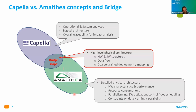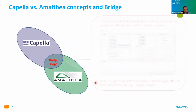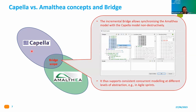Details below the physical architecture level are modeled in AMALTHEA — hardware characteristics, performance, clock domains, energy consumption, and all constraints on data timing and parallelism. Colleagues at TRT and Thales developed a bridge providing a non-destructive way to keep both models in sync: you can start designing in Capella, generate an AMALTHEA model, add more detailed information in AMALTHEA, and still push updates from Capella without destroying the AMALTHEA model. The AMPERE analysis is then based on this AMALTHEA model.